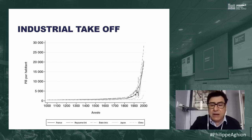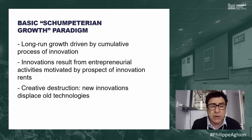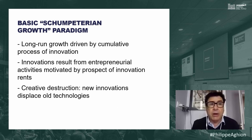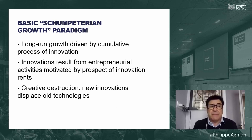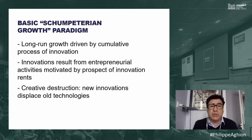Joel Mokir provides the most compelling explanation, and what's very interesting is that the elements he offers fit perfectly the Schumpeterian paradigm. First, you need cumulative innovation. Mokir tells you that universities developed in Europe with openness and exchange of ideas. The encyclopedia — the Encyclopédie of Diderot and Encyclopaedia Britannica — codified knowledge, making it much easier to build on previous innovations. Europe had institutions favoring cumulative innovation.